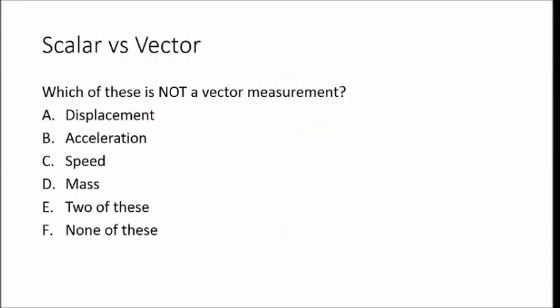So what is not a vector? Let's take a look at this. Displacement is a vector. Acceleration in our class, for the most part, is a vector. Speed is not a vector, and mass is not a vector. So the right answer is two of these. Both speed and mass are not vectors.